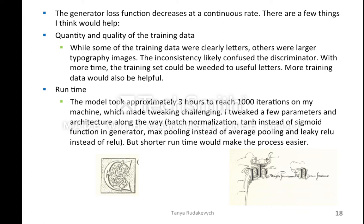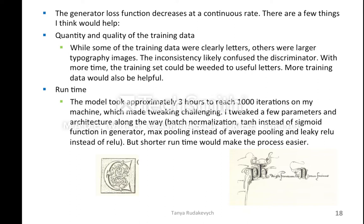Some things I think would help: the quantity and quality of the data. Some images were a pretty clear single letter like C, W, or T, while others were larger typography images with multiple letters, which probably confused the discriminator. With more time, the training set could be weeded out to just useful single letters — it was only about 1,500 images, probably not enough, so more training data would really help. I also just resized the images without cropping or dealing with the stretchiness, so anything that would address that would help. The model also took maybe three hours to reach a thousand iterations, so tweaking was a bit of a challenge.